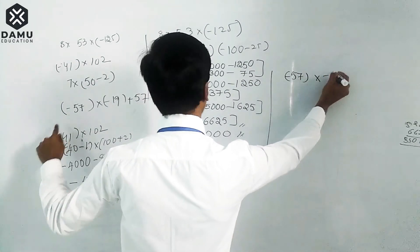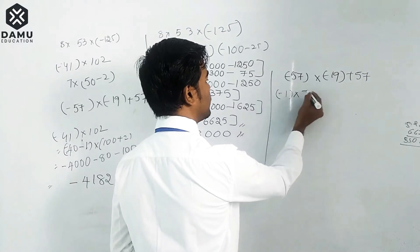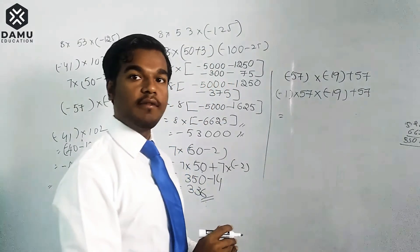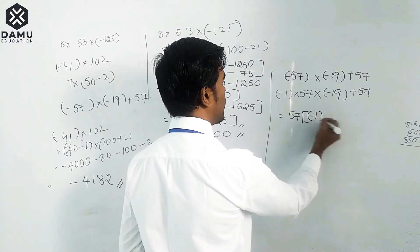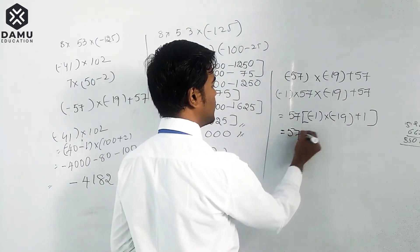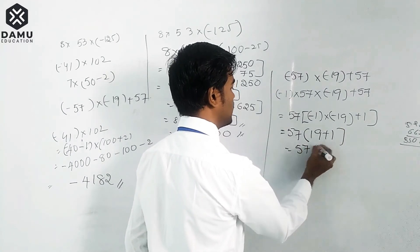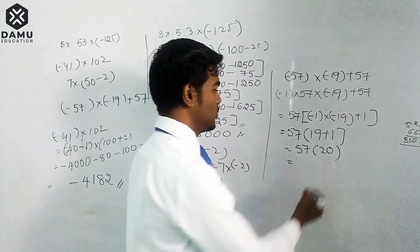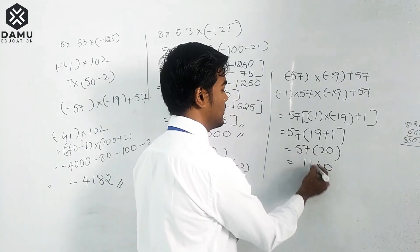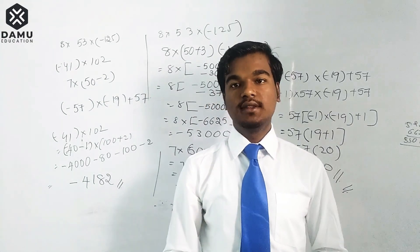Next: (−57)×(−90+57). Write minus 57 as minus 1 into 57. Taking 57 as common: 57 into minus 1 into (minus 90 plus 57). That becomes 57 into minus 1 into minus 19 plus 1, giving 57 into 20. Multiplying: 57 into 20 equals 1140. The answer is 1140.